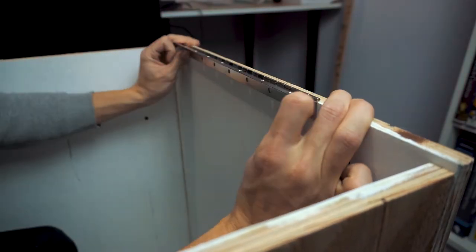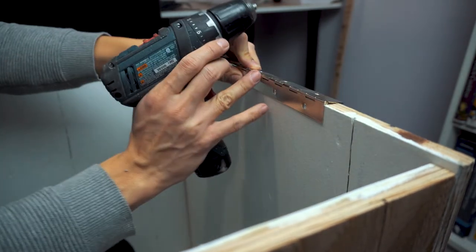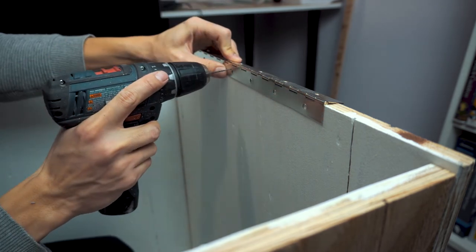After lamenting over the fact that our first design wasn't in our skill set, we opted to use piano hinges to make standard swing-out doors with an acrylic window.